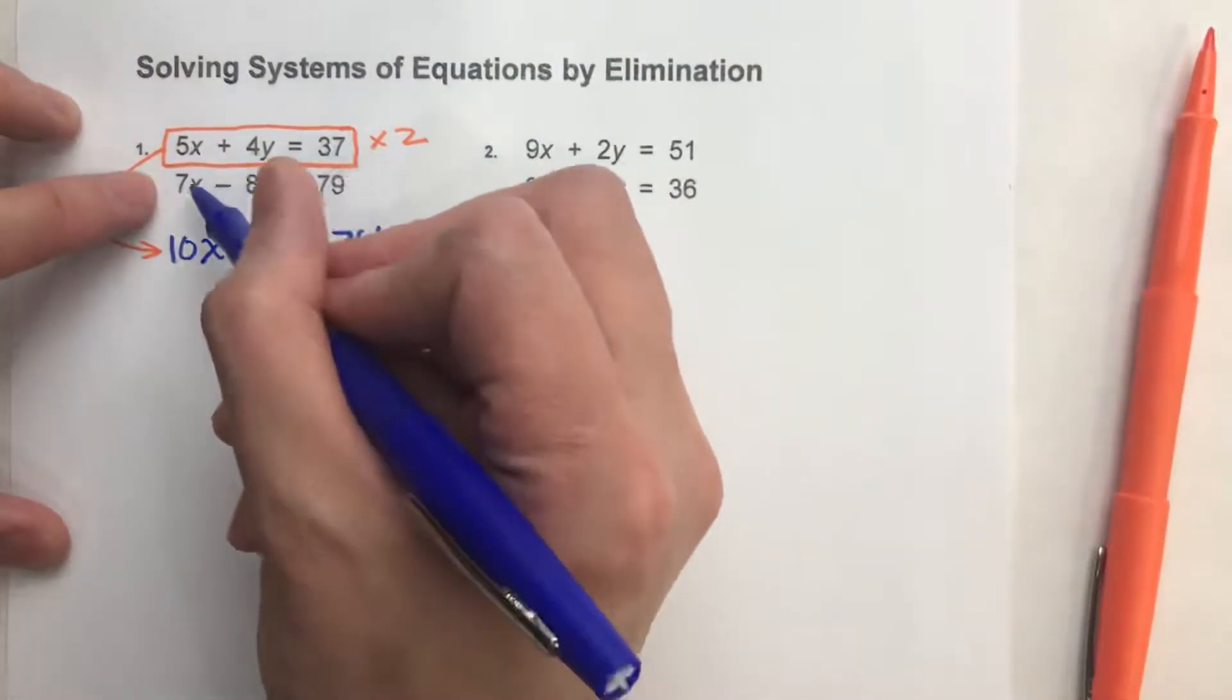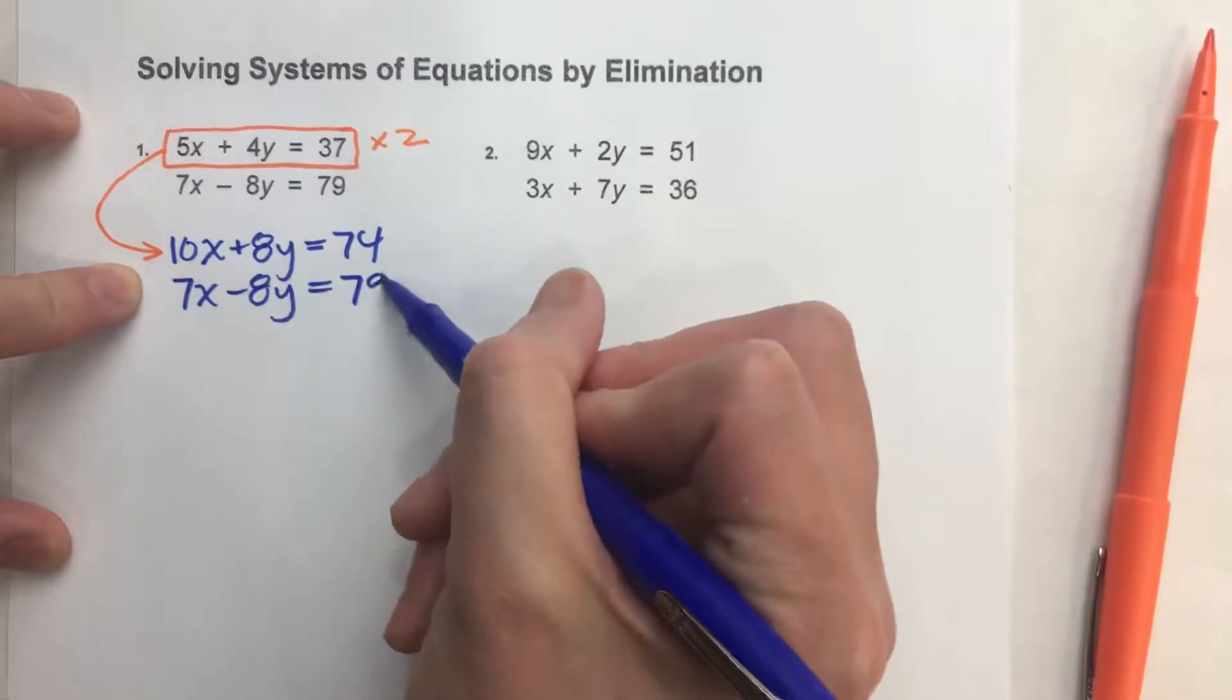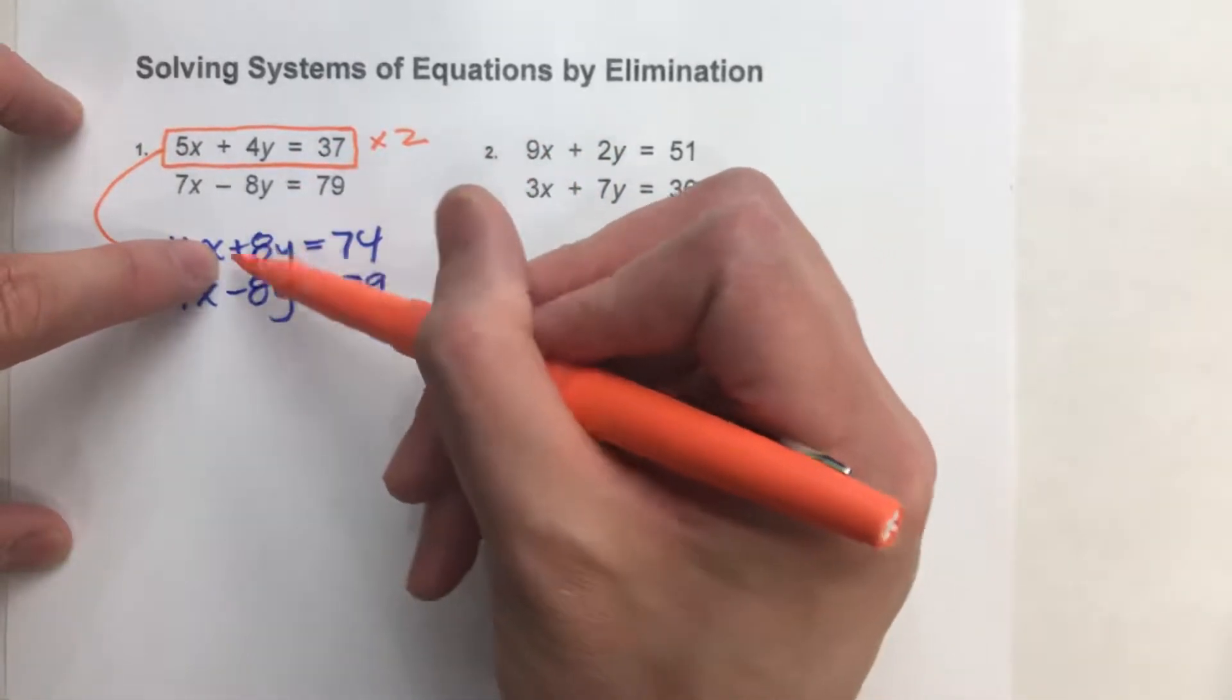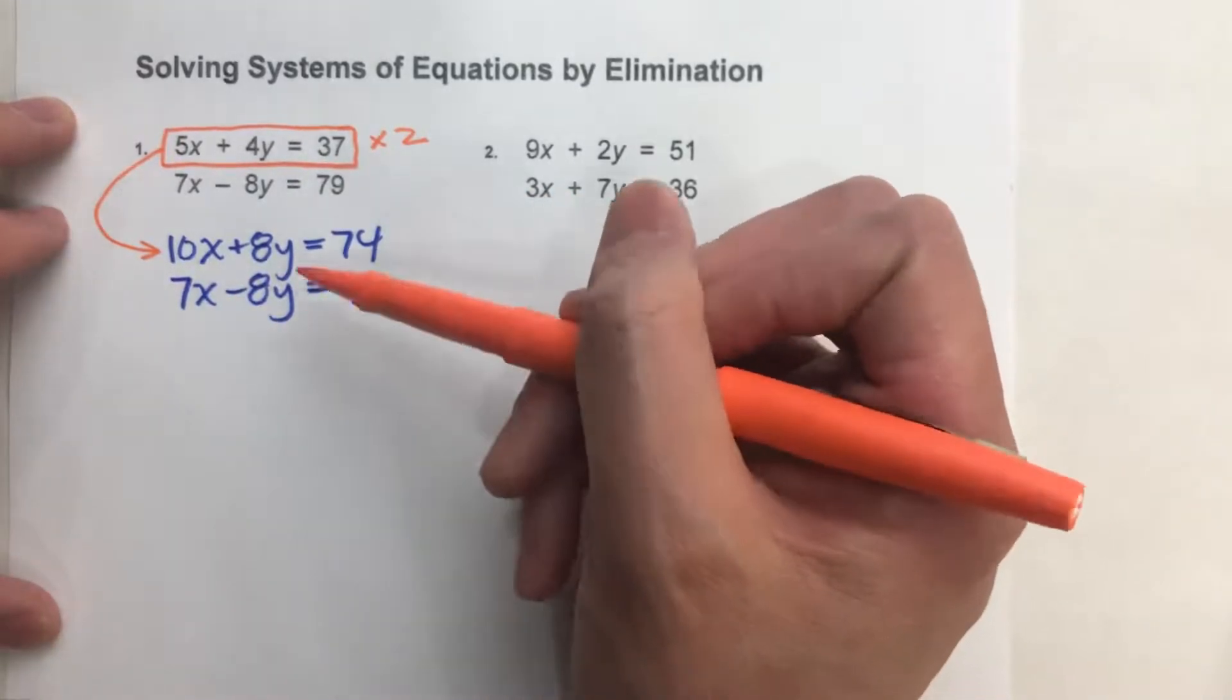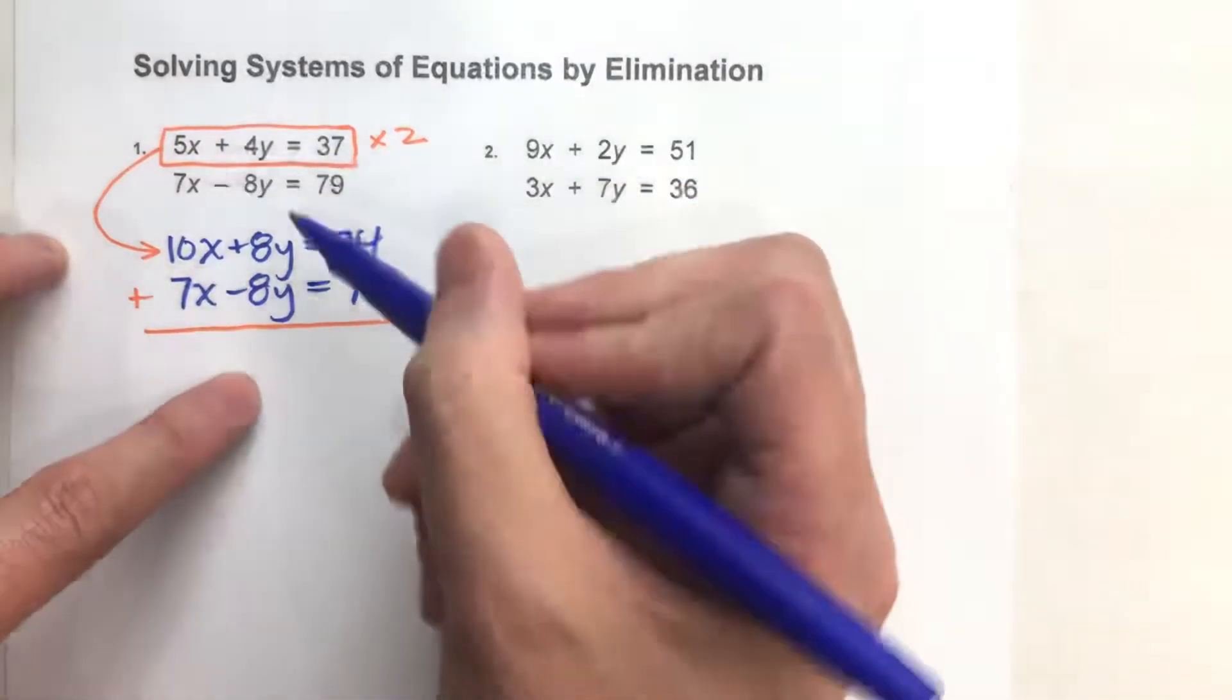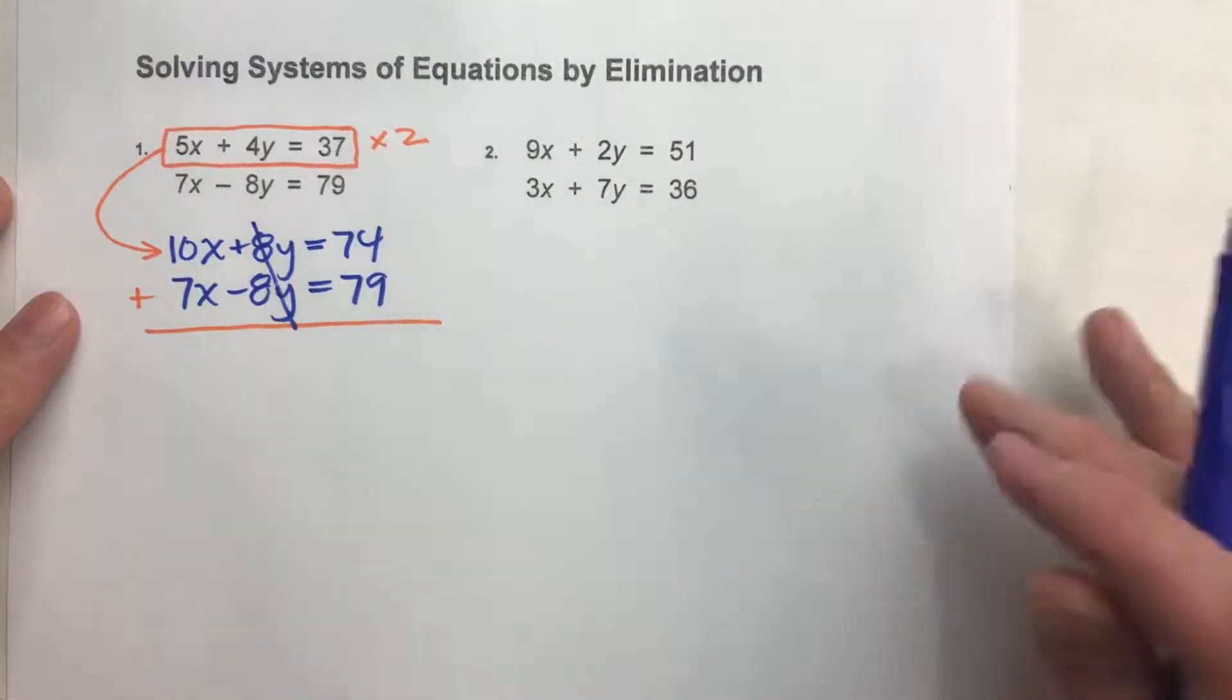Now, when I drop the other equation down underneath it, now you'll see why I chose to multiply the first equation by 2. If you look at the y's, the first equation now has a positive 8y and the second equation now has a negative 8y. And this is what I want because when I add these two equations together, I know that 8y plus negative 8y will eliminate all the y's.